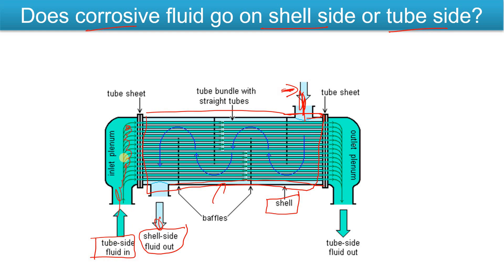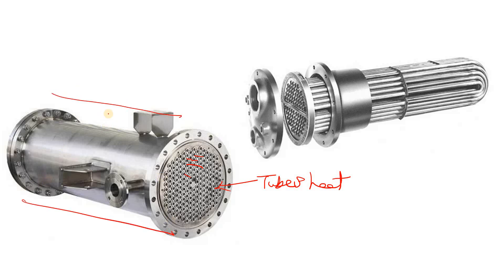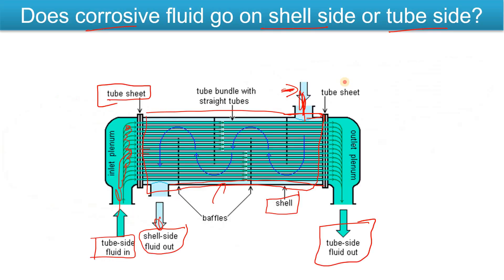Now the tube side fluid will go from here through the tubes which you can see here, and it will exit from here. There is the tubesheet, which does not allow the tube side fluid to enter the shell side. So the tube side fluid flows inside the tubes, which are surrounded by the shell side fluid.